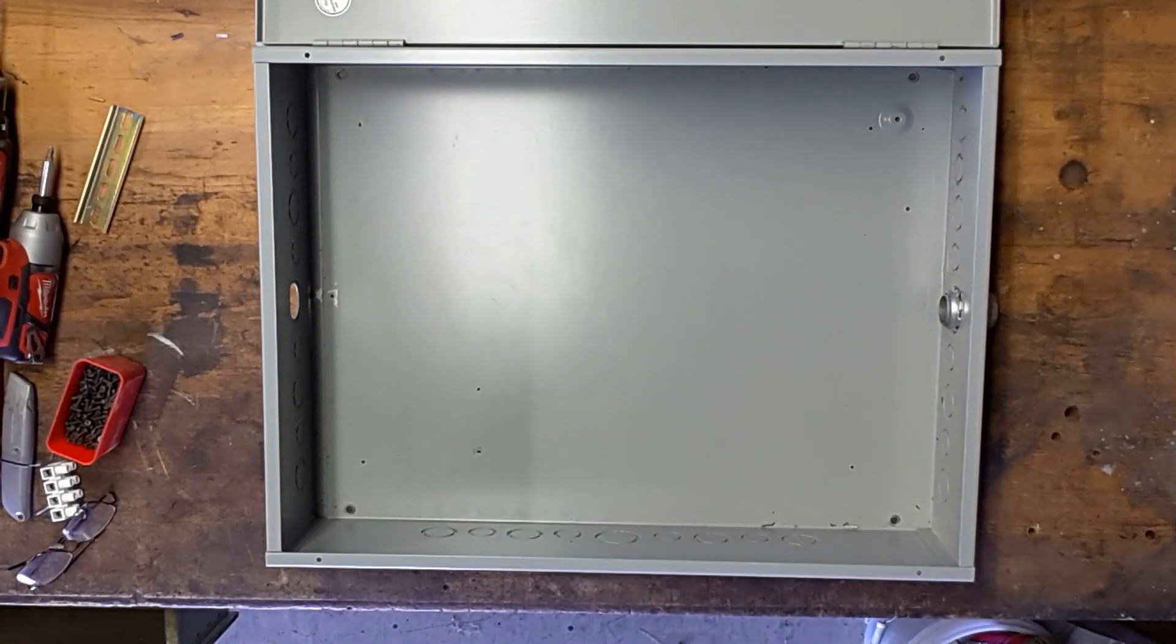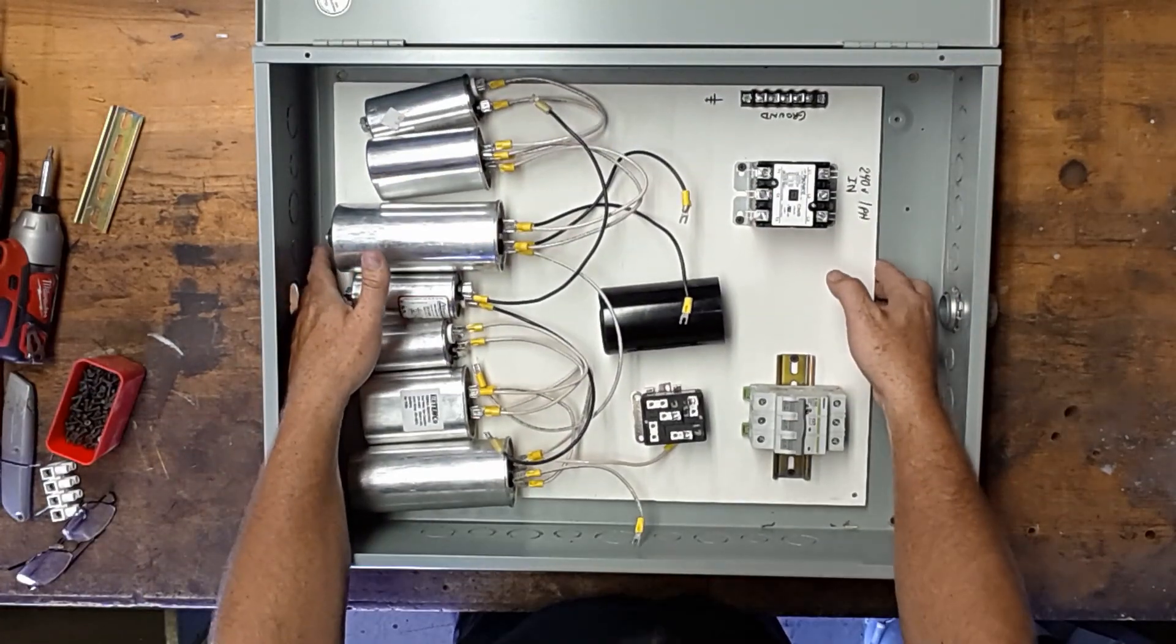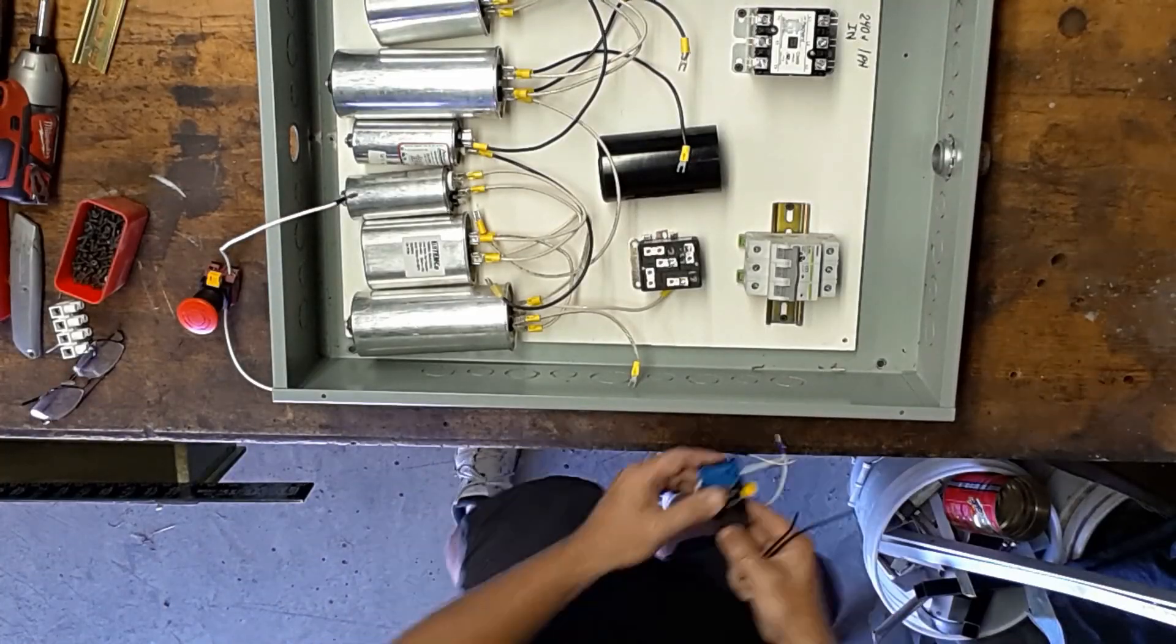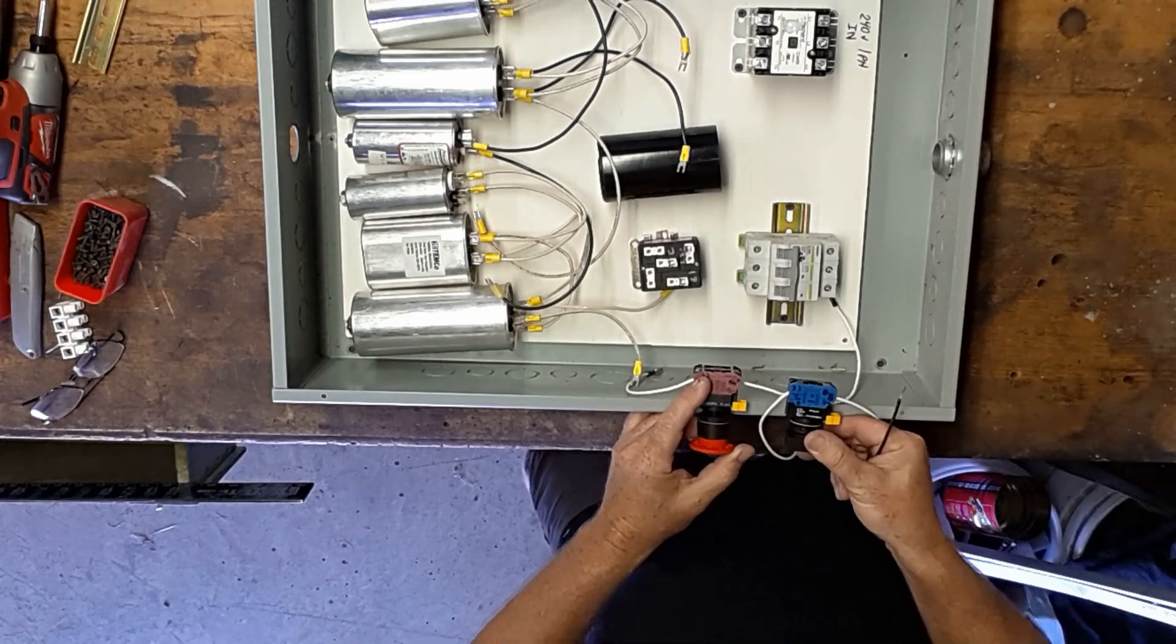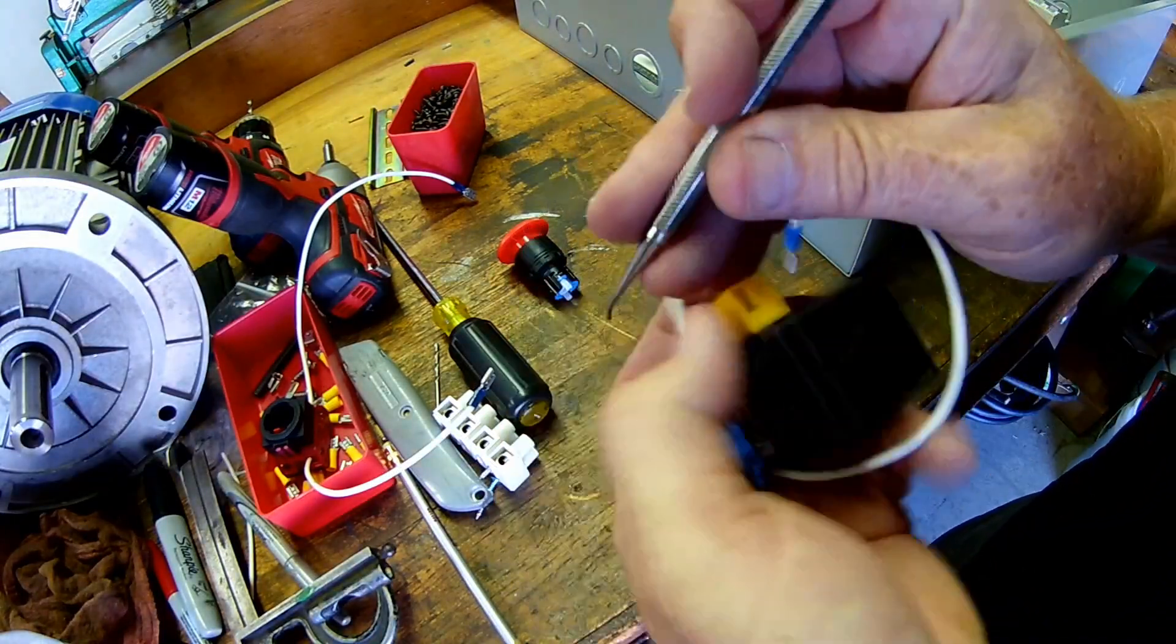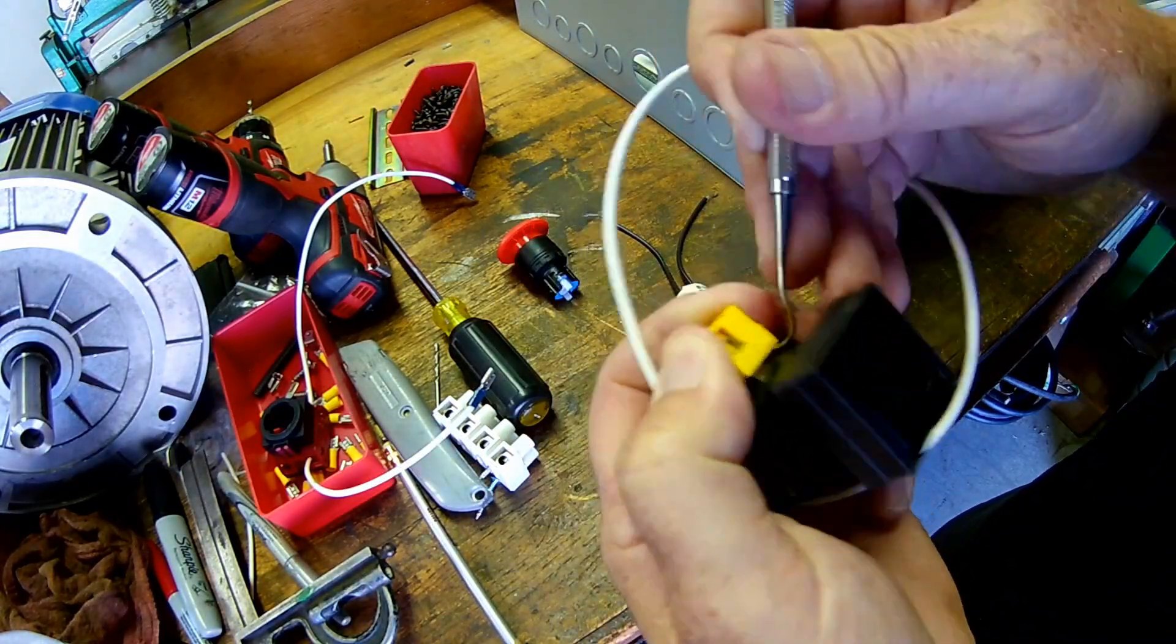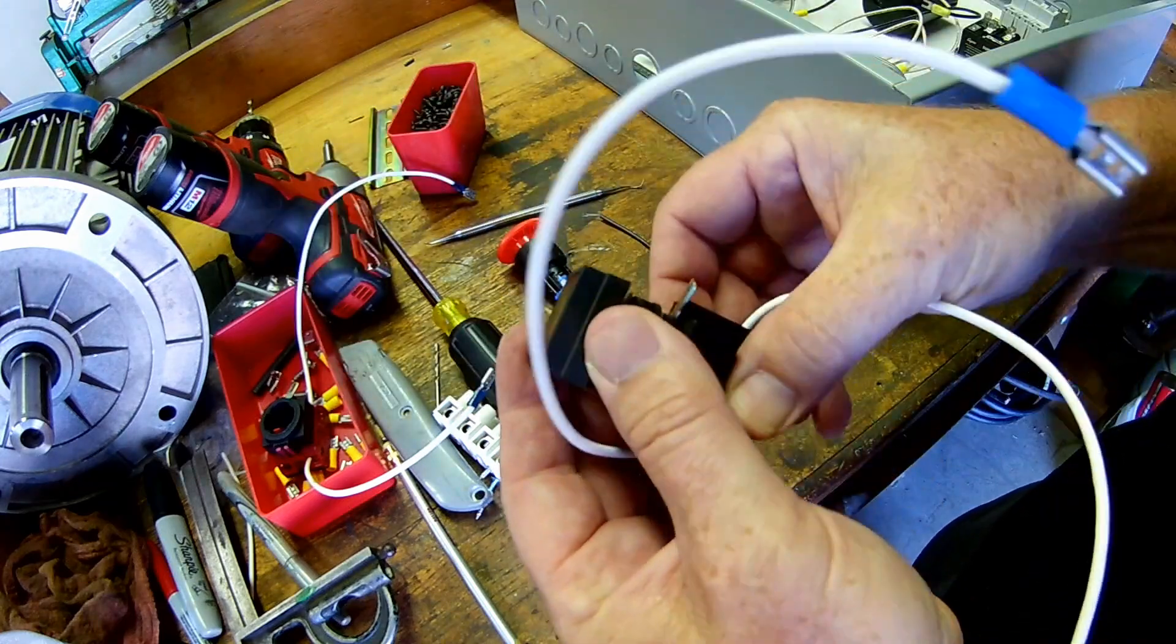With the component mounting started I decided it was time to set the board in the box and see how the buttons were going to lay out. These are a modular style switch so I started by separating the button portion from the actual switching mechanism.